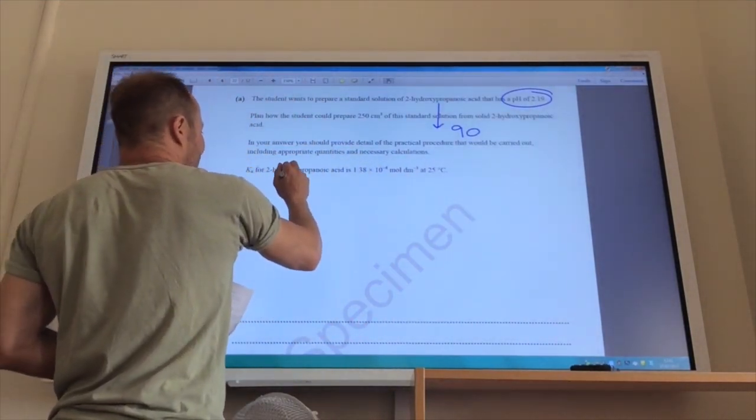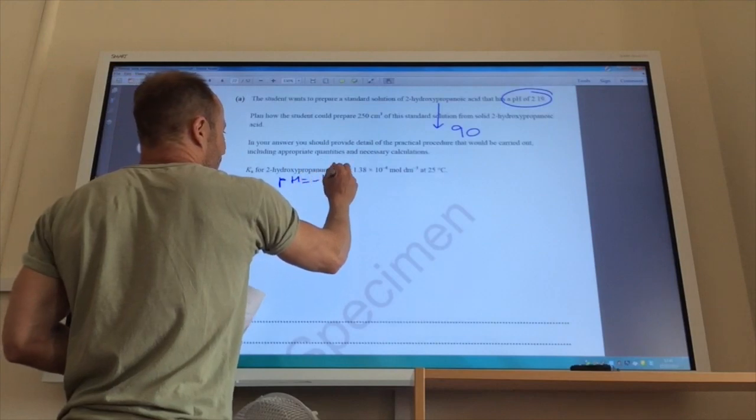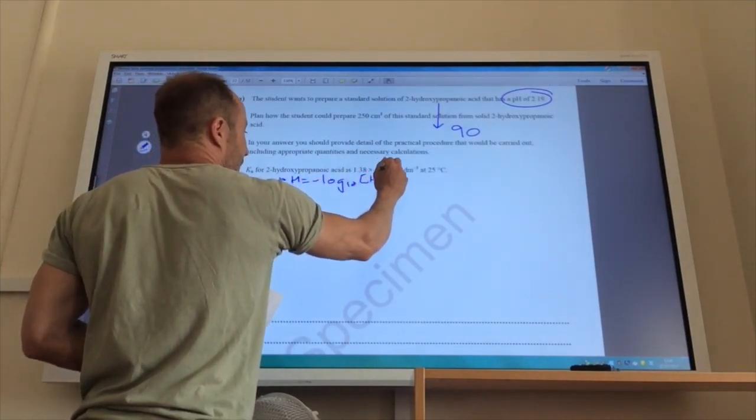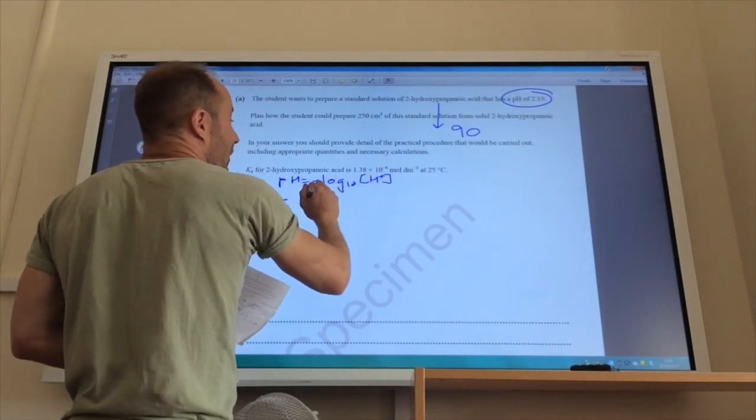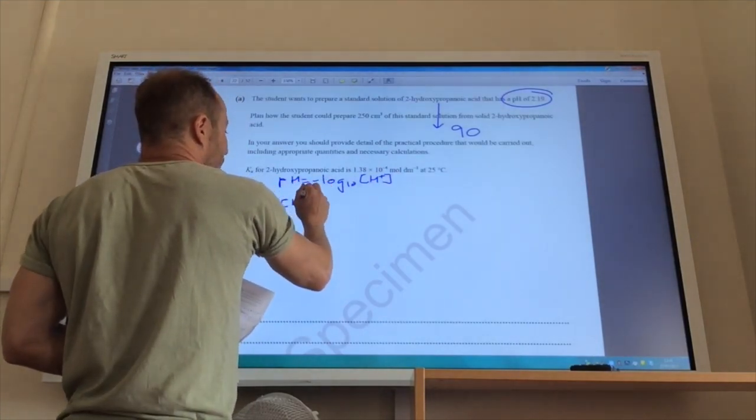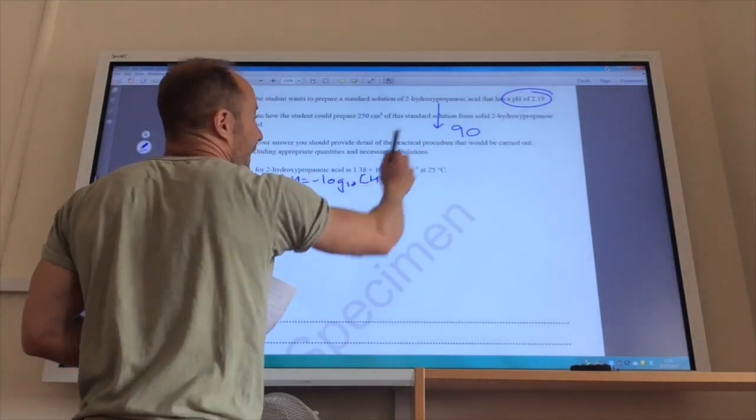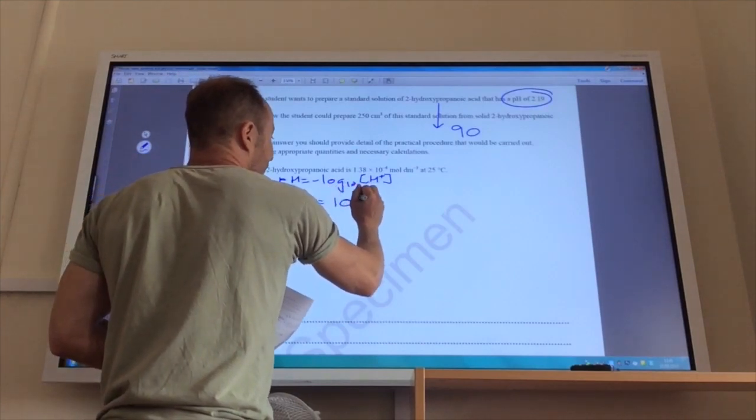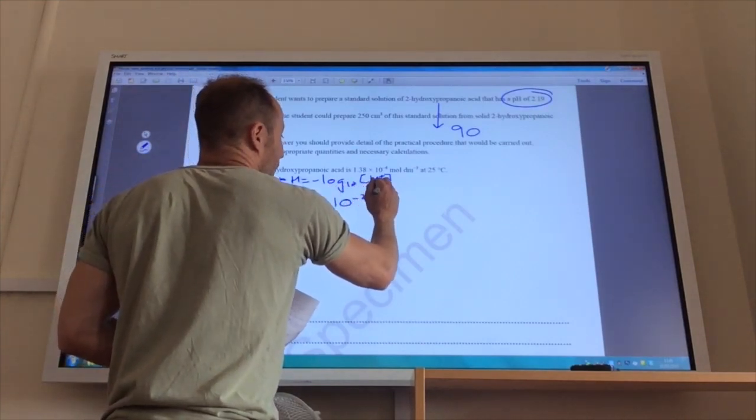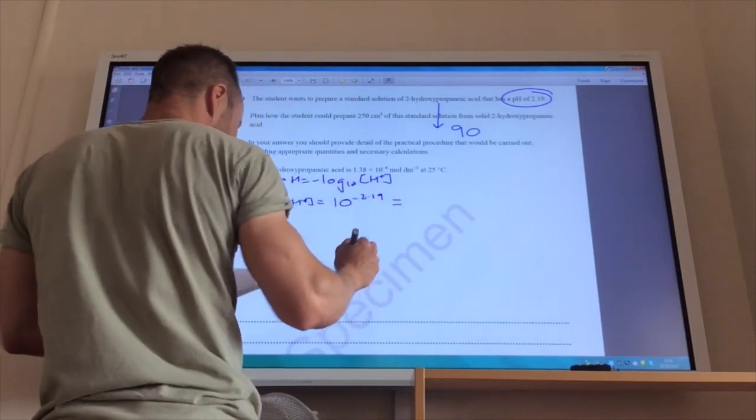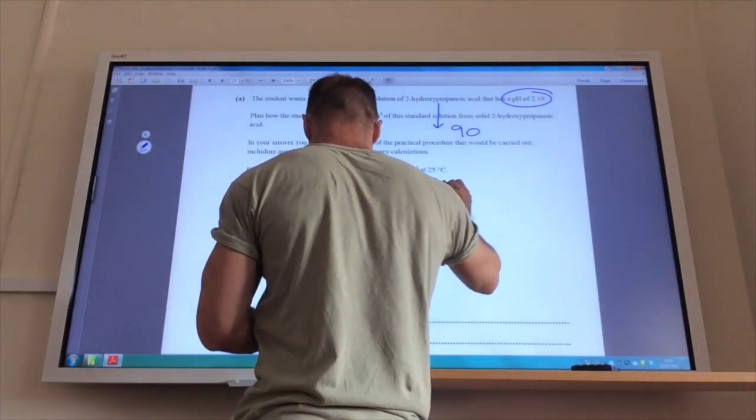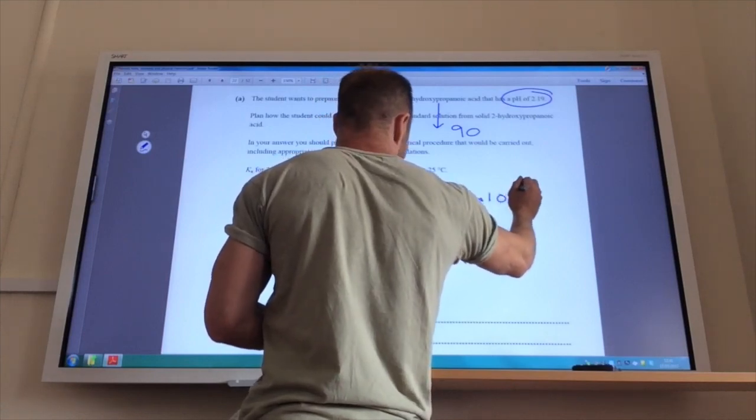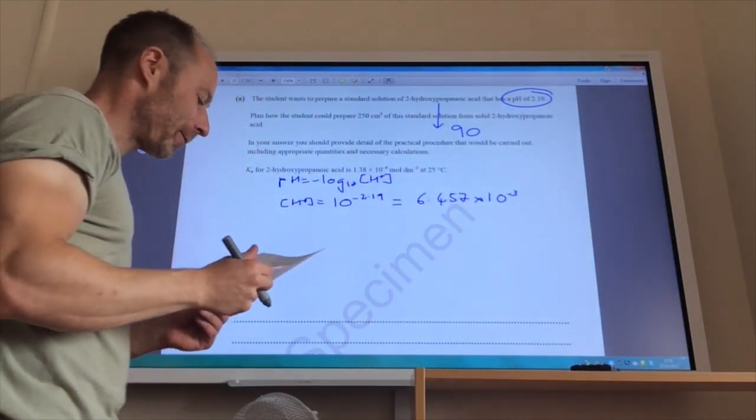So, for my pH equation, pH equals minus log to the base 10 of H plus. I can rearrange that to find the concentration of H plus ions that will give me a pH of 2.19. So, the concentration is 10 to the minus 2.19. And if you do that calculation, you will get your concentration to be 6.457 times 10 to the minus 3 of hydrogen ions.